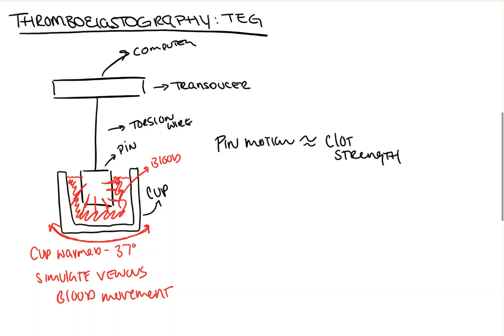As the clot gets thicker and stronger, the pin motion increases. Then, after that, as fibrinolysis occurs, the pin begins to move less as the clot weakens. So, now that we have an idea of how the machine works, we can start to take a look at the actual readout and how to interpret it.